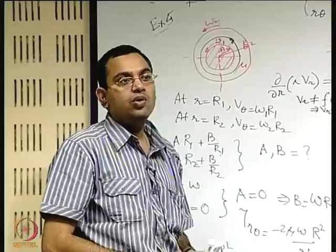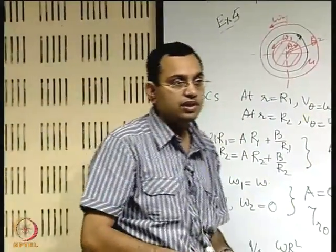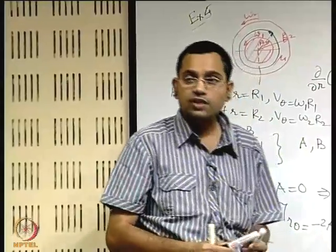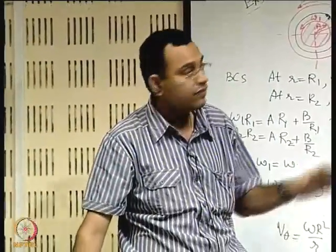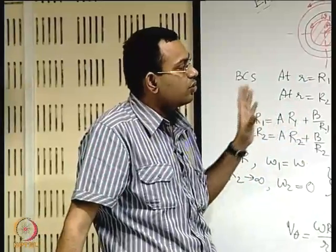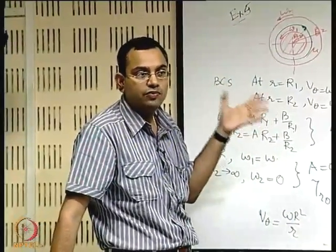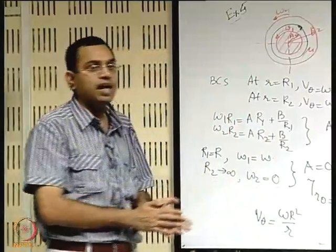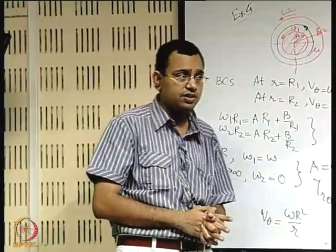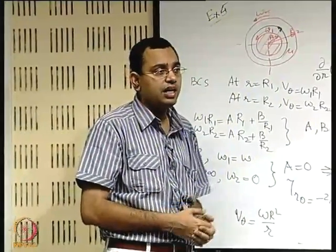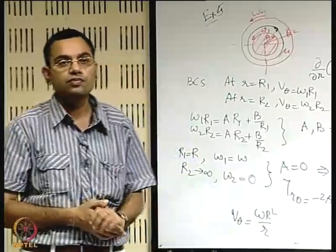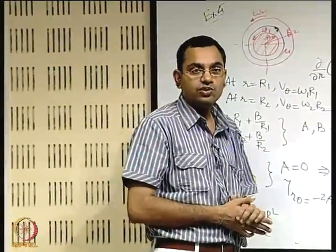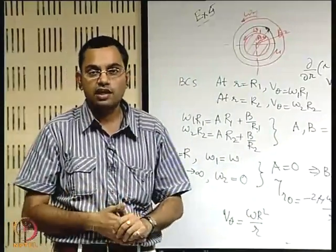To summarize, we have examined exact solutions of the Navier-Stokes equations for steady, fully developed flows — including Hagen-Poiseuille pipe flow and Taylor-Couette flow between rotating cylinders. These closed-form solutions yield important engineering and scientific insights. We conclude this chapter here; from the next lecture we will begin the study of turbulent flows.